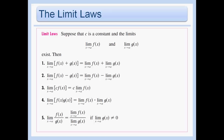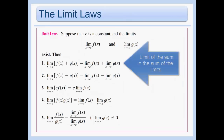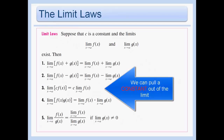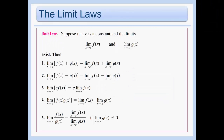We're supposing that c is a constant, and we know the limit as x approaches a of f of x, and the limit as x approaches a of g of x — they both exist. Number one says the limit of a sum is the sum of the limits. Number two: the limit of a difference is the difference of the limits. Number three: the limit of a constant times a function — we can pull that constant out. Number four: the limit of a product is the product of the limits. Number five: the limit of a quotient is the quotient of the limits, provided the denominator does not equal zero.